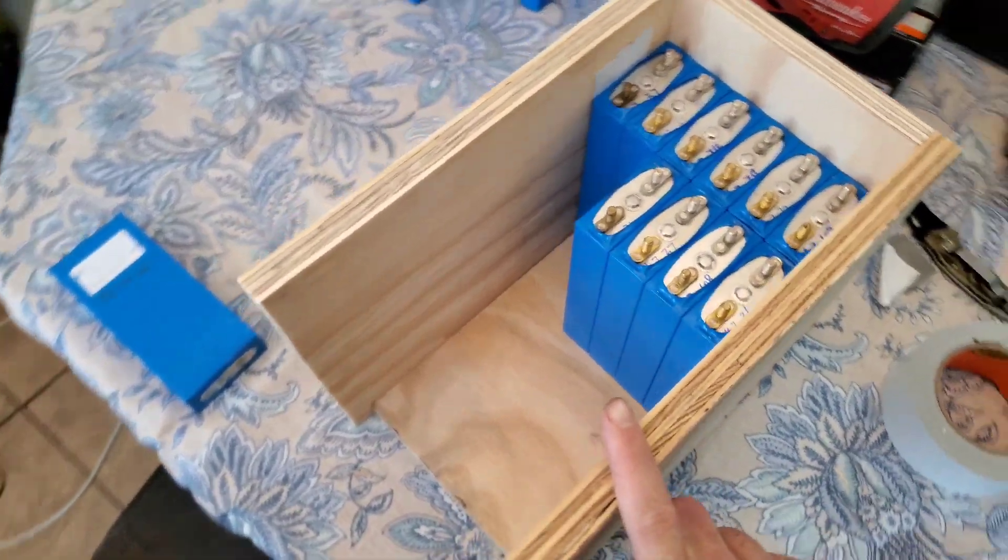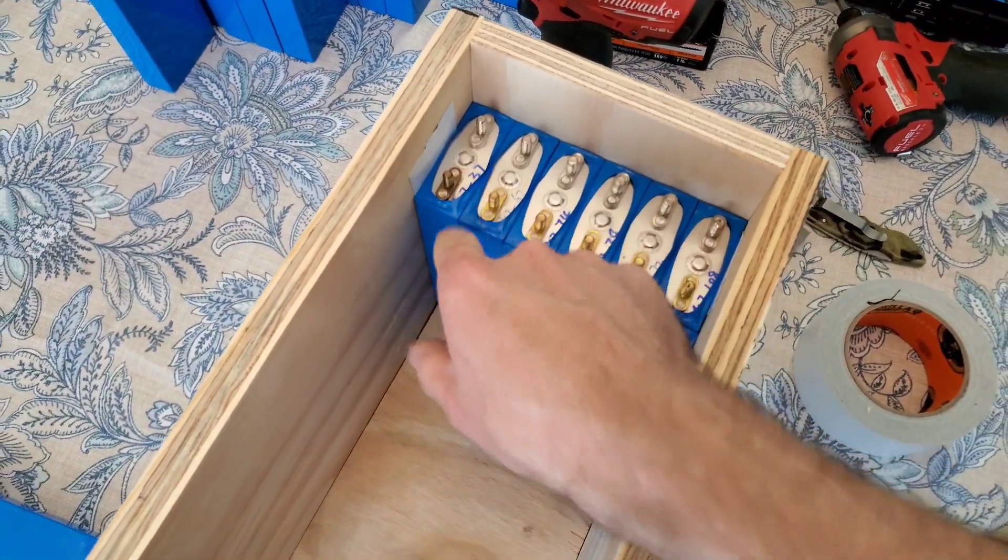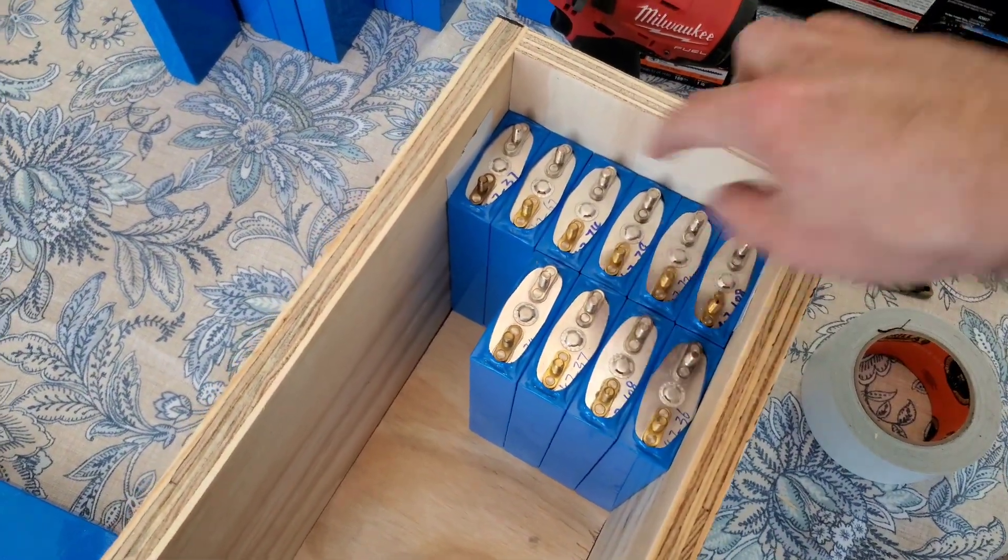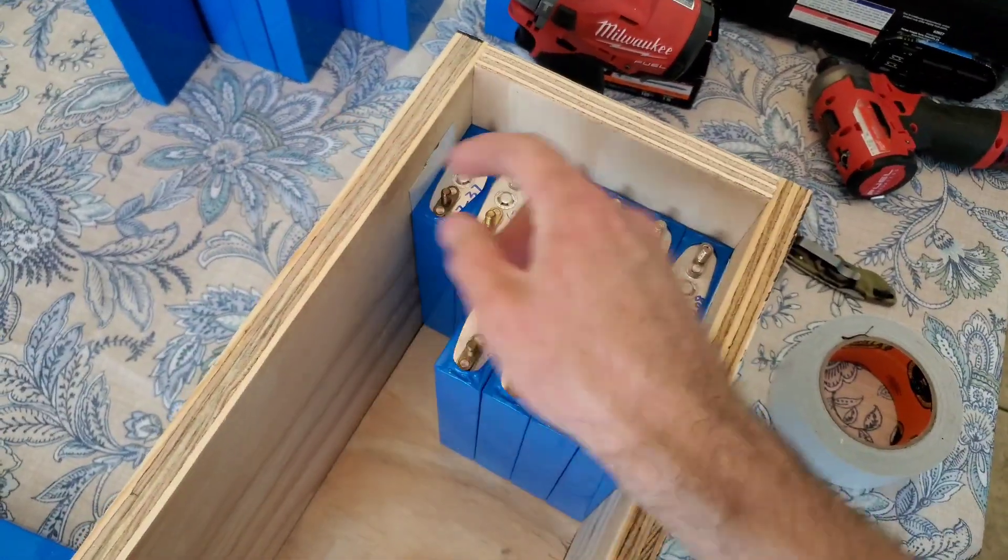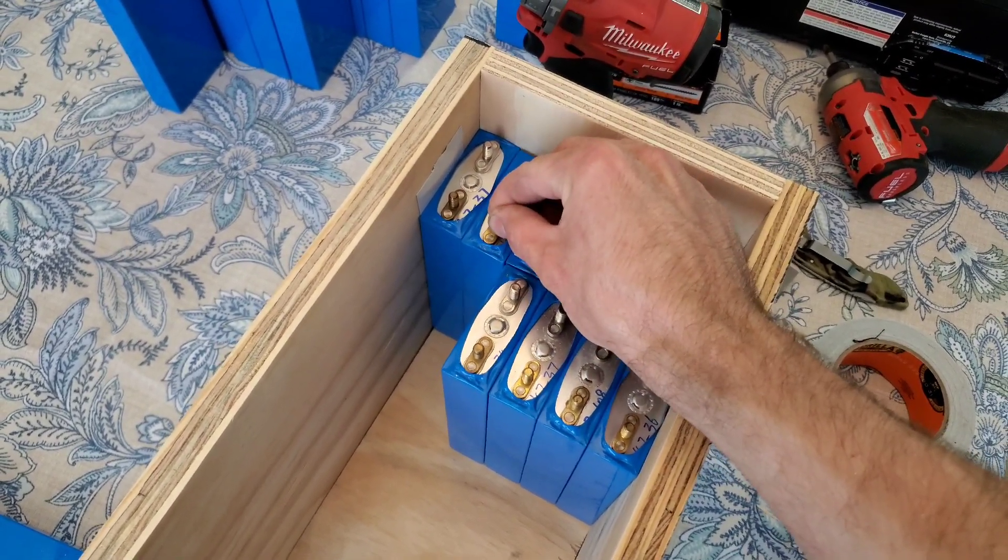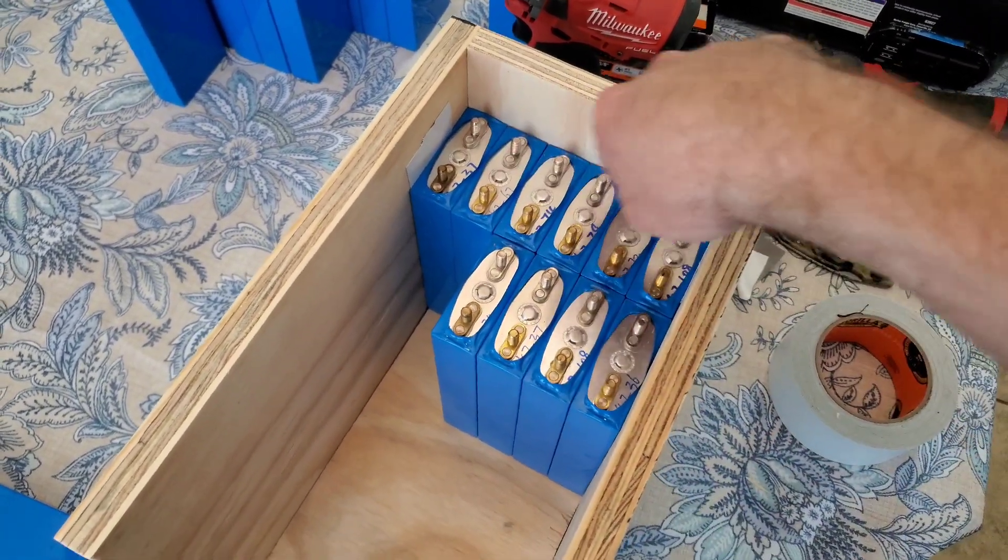Alright, got the box done. Three-quarter inch ply. Right now I'm loading the batteries in. I put a little bit of duct tape on the insides with the sticky side facing that way to shim these. So you can see they have a little bit of resistance.